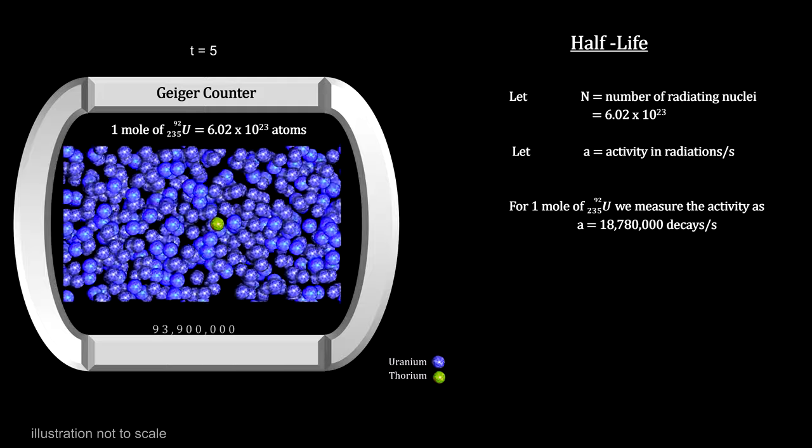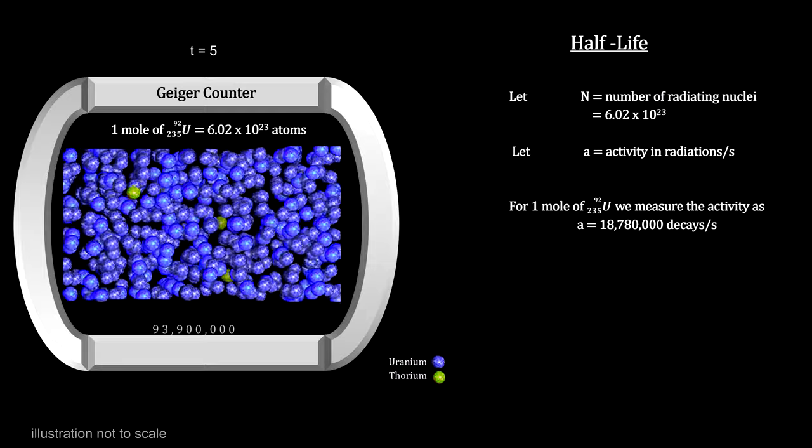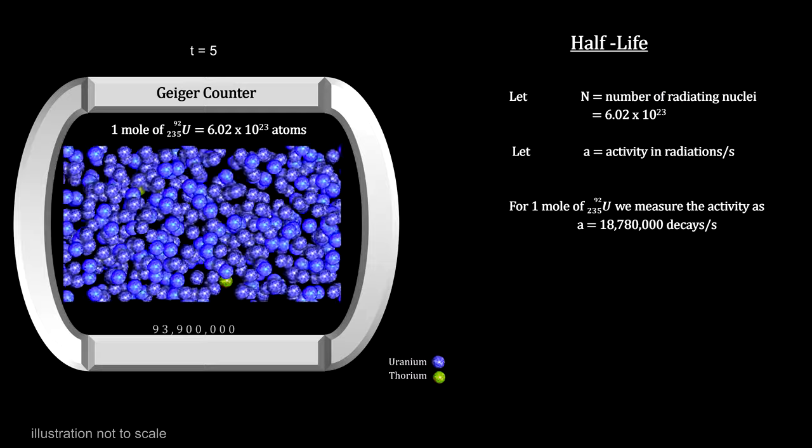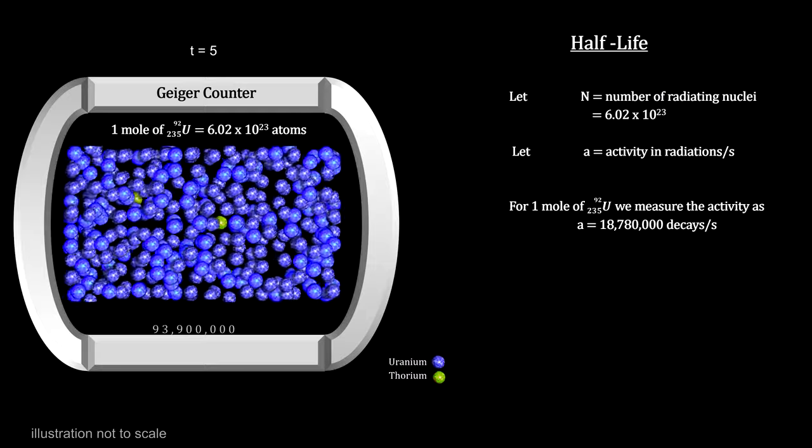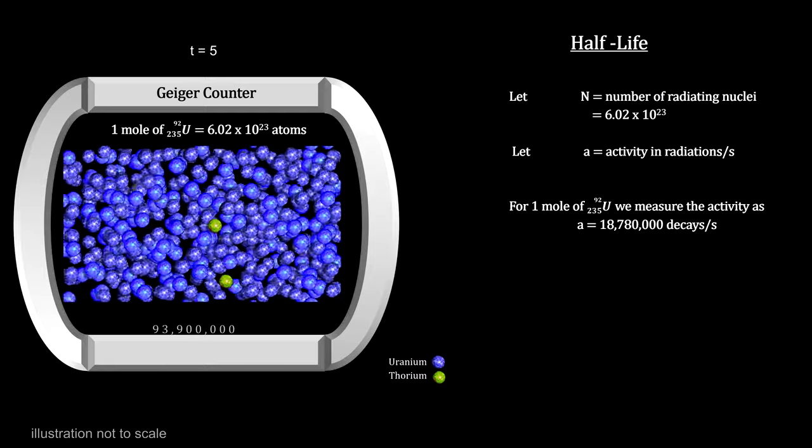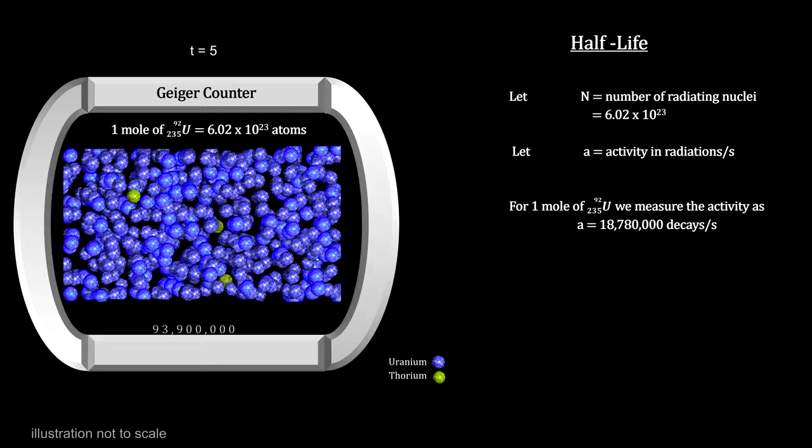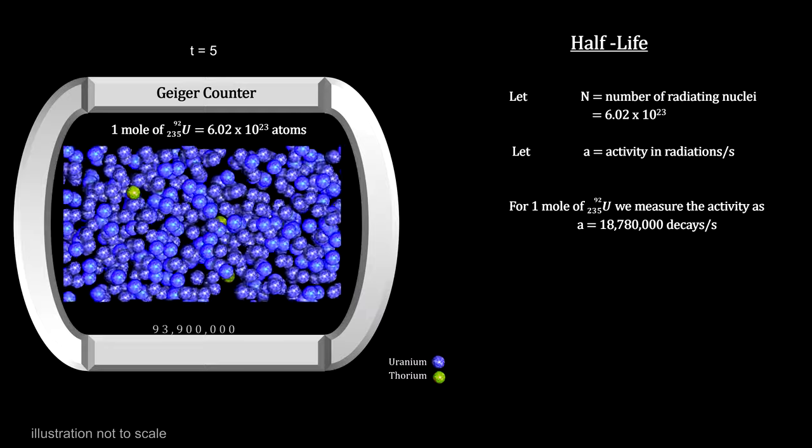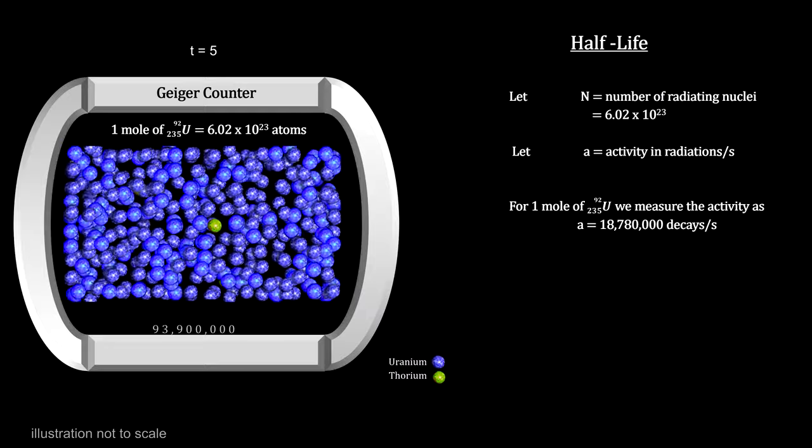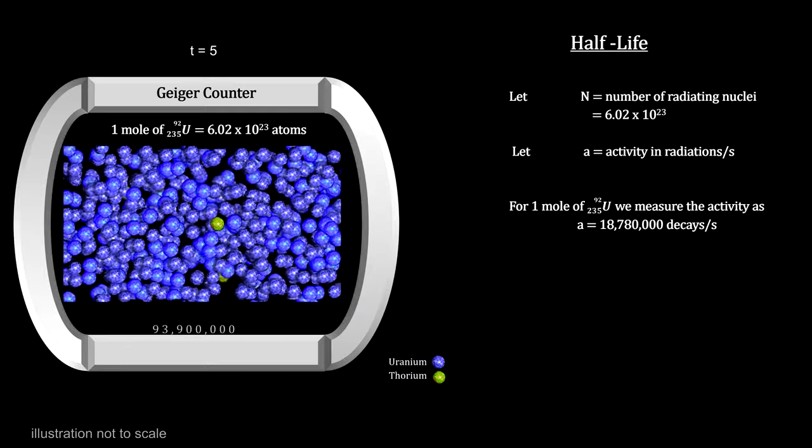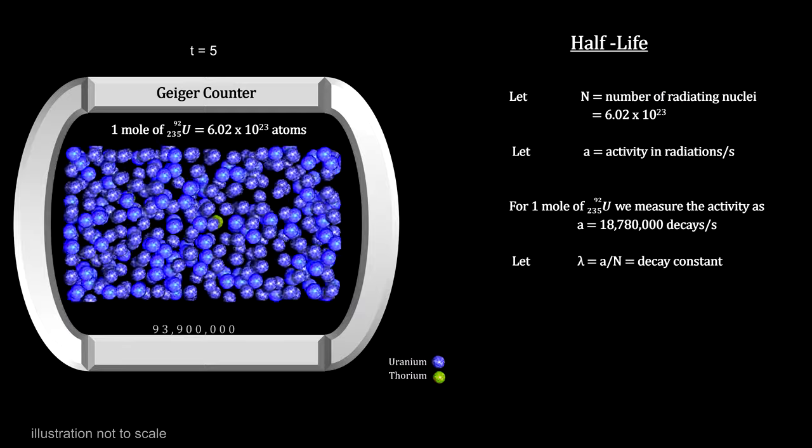Our uranium-235 sample is decaying almost 19 million nuclei per second. Given the number of radiating molecules in a sample and measuring the activity, we can calculate the probability for any one molecule to decay in a second. This is called the decay constant.